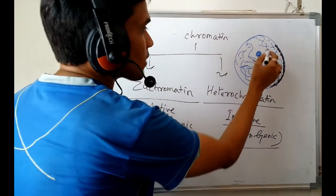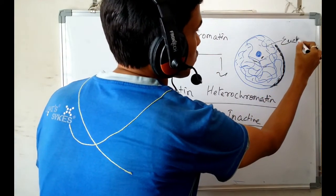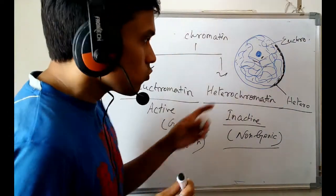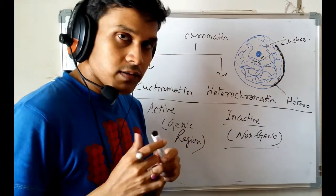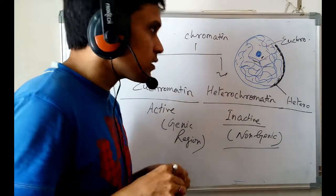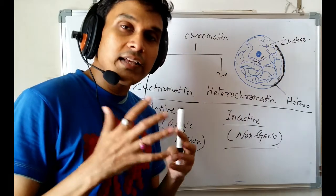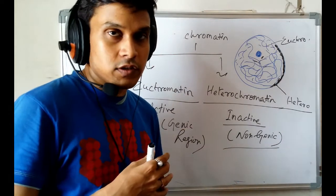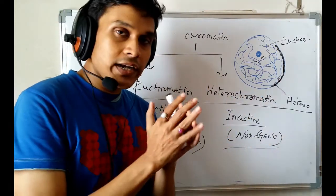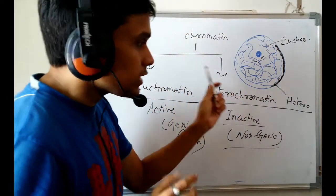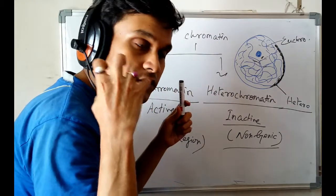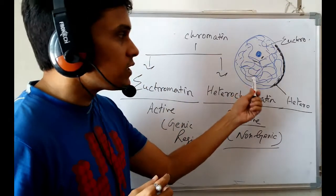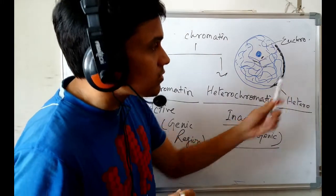The loosely packed structure is the euchromatic part and the condensed structure is the heterochromatic part. The euchromatic region is loosely packed because, as I have told in my previous class, during interphase the DNA is open to transcription and translation. If the DNA will not be loose enough, the RNA polymerase or transcription factors will not get access to the active region of the DNA.